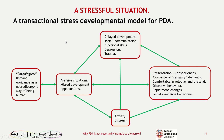This is a transactional stress developmental model for PDA which I am suggesting may be appropriate. It includes delayed development, social communication and function issues, depression and trauma in one box, and anxiety and stress in another. The core five PDA features are: avoidance of demands on the individual, role-playing and pretend, obsessive behaviour which includes demand avoidance, rapid mood changes, and social avoidance behaviours.